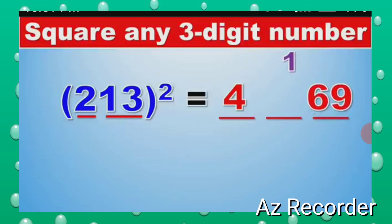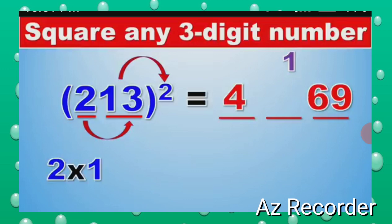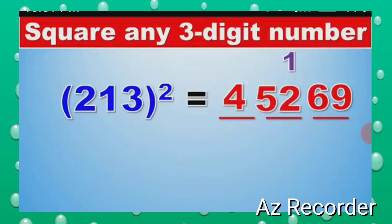And this middle part is 2 times 13 times 2. So 2 times 13 is 26, times 2 is 52. So 52 will be our middle part. But as we know, we carried over the 1 from the last part of our answer.